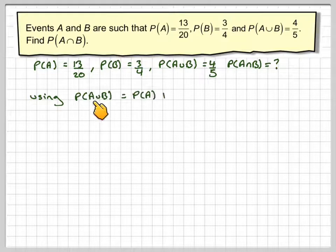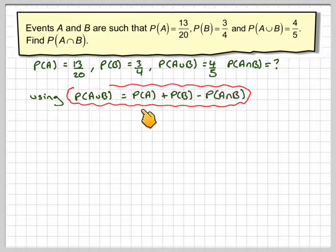Now we know from the previous video that the probability of A union B, A or B, is the probability of A plus the probability of B minus the probability of A intersection B, or A and B.